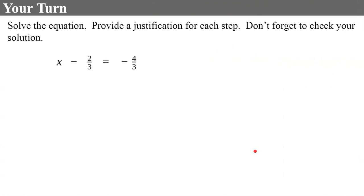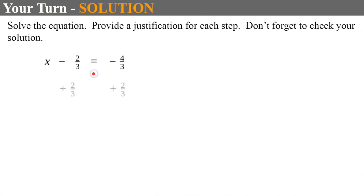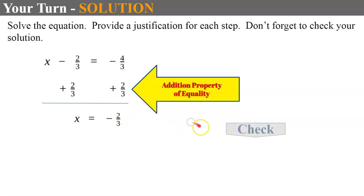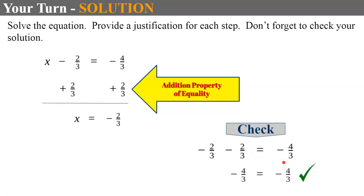Try another one — solve, justify, and check. Come back when you're ready. Welcome back. I identify that x is being subtracted by 2/3. The inverse is to add 2/3 to both sides using the addition property of equality. x equals negative 2/3, since negative 4/3 plus 2/3 is negative 2/3. Checking by replacing x with negative 2/3: negative 2/3 add the opposite, negative 2/3 plus negative 2/3 is indeed negative 4/3, and it checks.